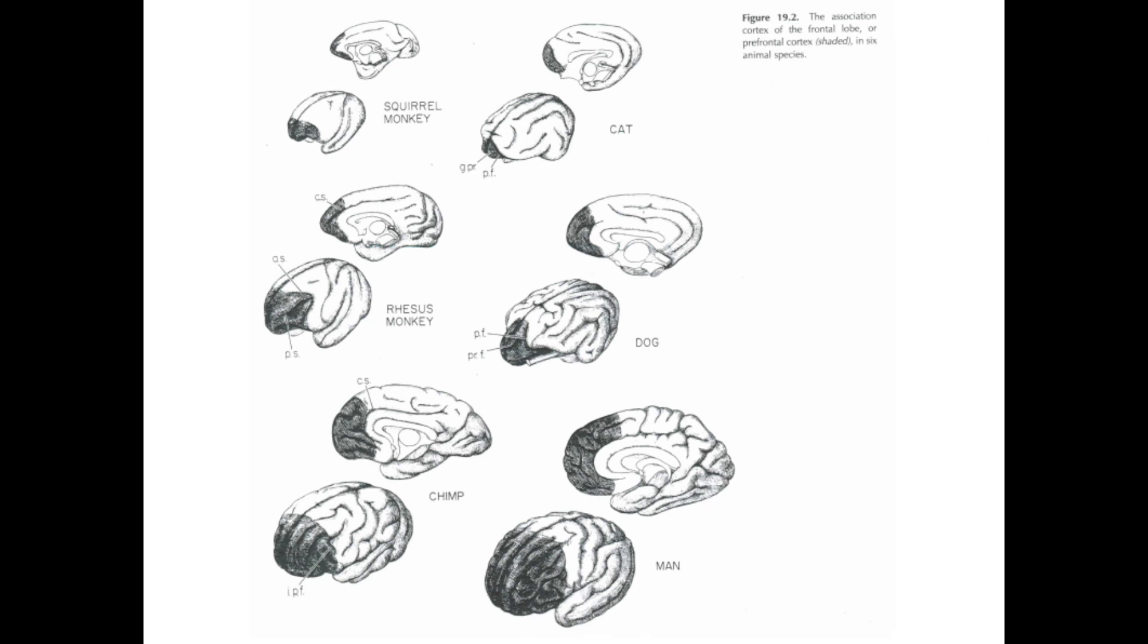And this image is just showing the prefrontal cortex in different species. They use a specific definition of the prefrontal cortex, related to the connection with the thalamus, and you can see that it's much bigger in humans than any other species.